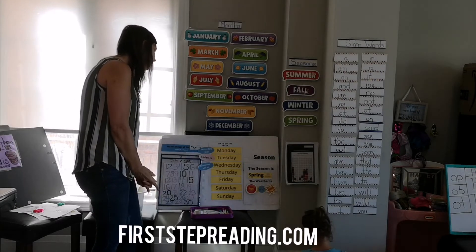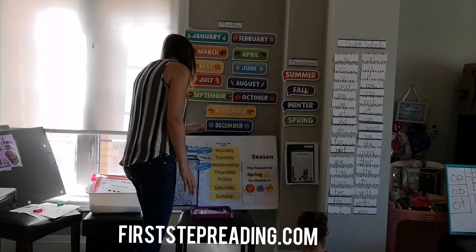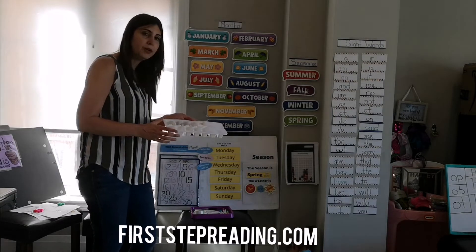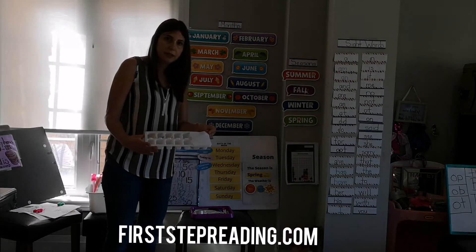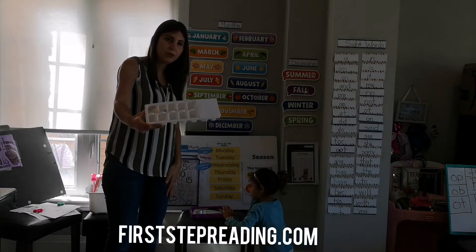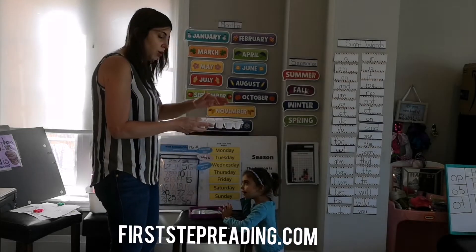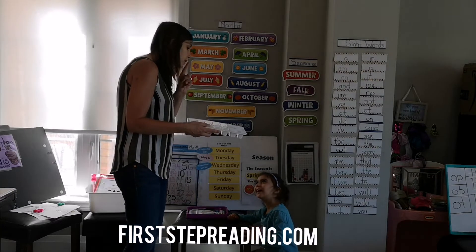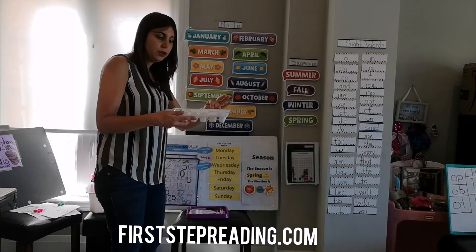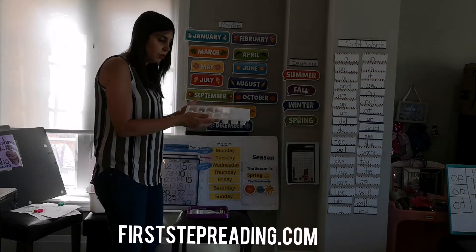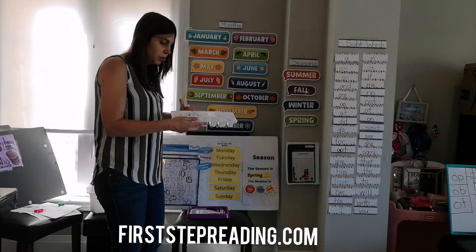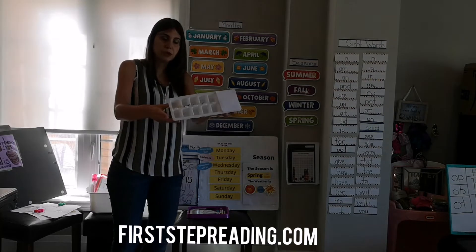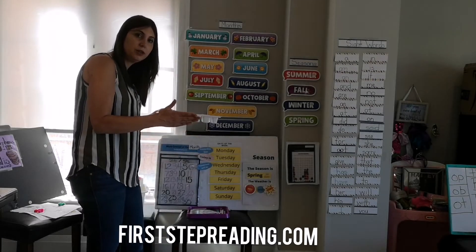Good job everyone. Did you get a chance to make your tenth frame yet? If you have an empty egg carton or ice tray, you can make your own version of a tenth frame. You only need ten boxes in a tenth frame: one, two, three, four, five, six, seven, eight, nine, ten. That is called a tenth frame.